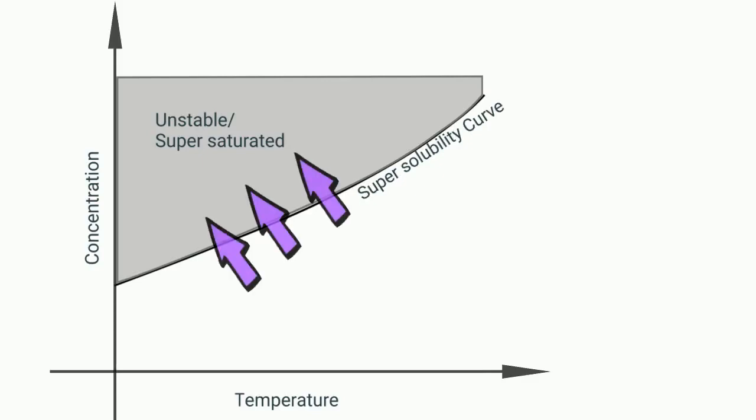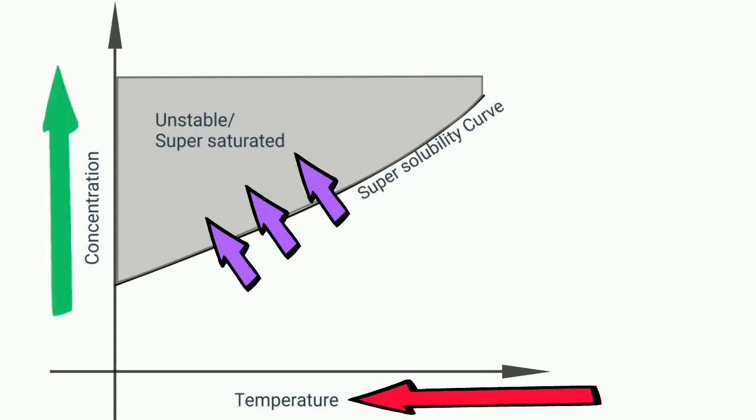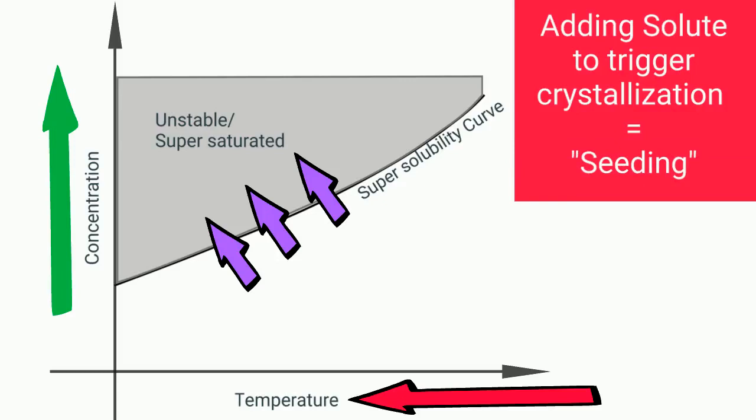To push a solution into the supersaturated zone, you can reduce the temperature of the solution or add more solute to increase the concentration. This latter process is called seeding and is frequently used in the pharmaceutical industry to crystallize APIs in a solution.